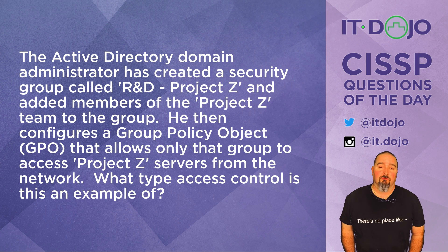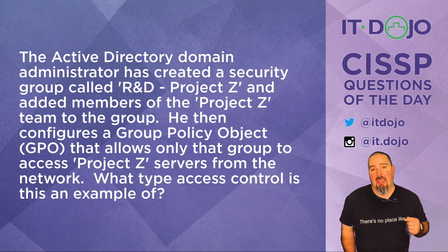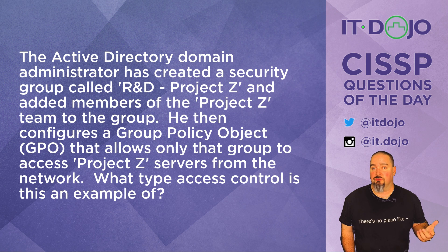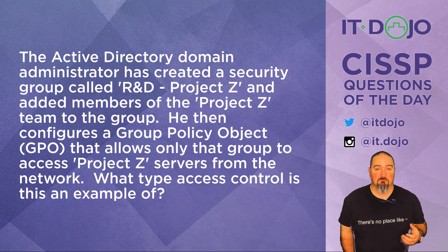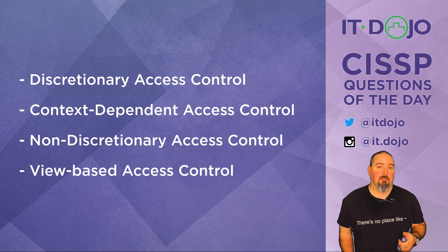An Active Directory domain admin has created a security group called 'Research and Development Project Z' and added to that security group members of Team Project Z. He then takes that security group and, using a Group Policy Object, configures the system to only allow access to Project Z servers to members of this group. My question for you is: what type of access control, conceptually, is that an example of?